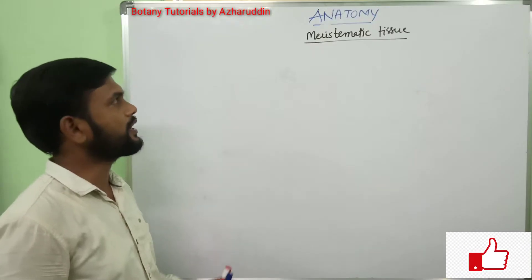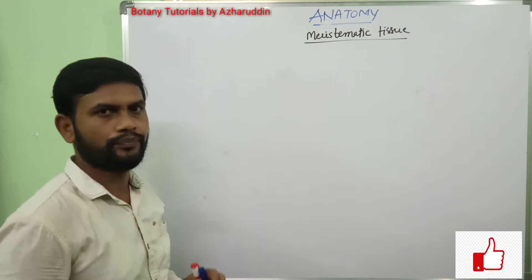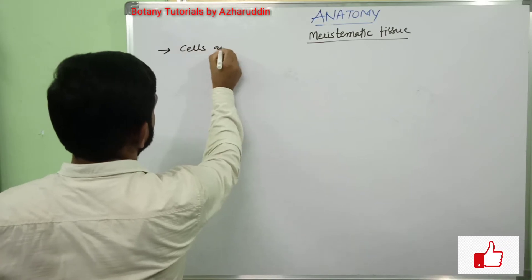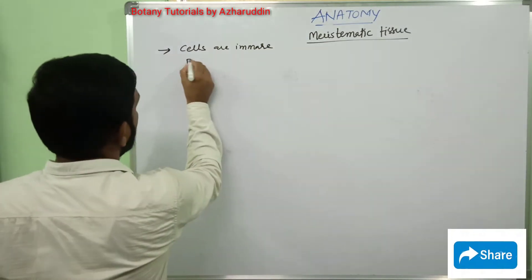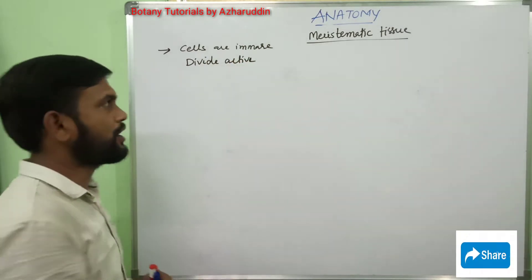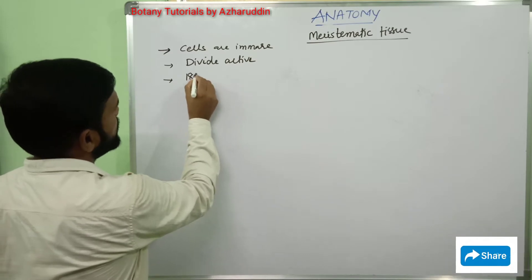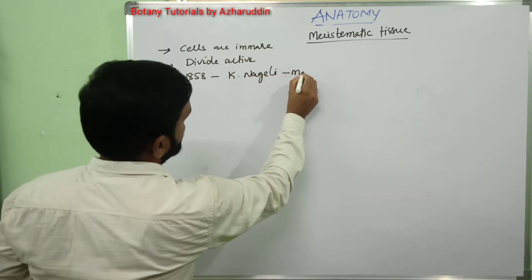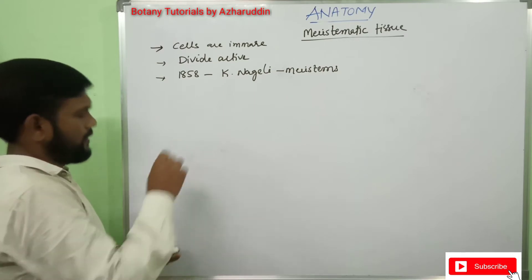Hello everyone. In this session we will take up the first type of tissue present in the plant body, which is meristematic tissue. In this tissue, cells are immature and they divide actively. The term meristematic tissue was first coined by Karl Nageli in the year 1858. Karl Nageli gave the term 'meristems', which is why meristematic tissue is also called meristems.